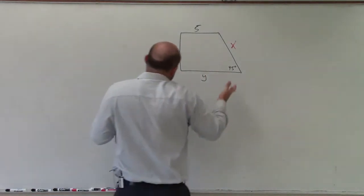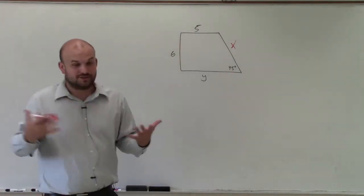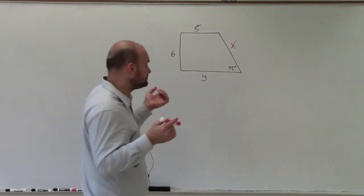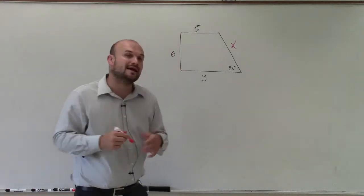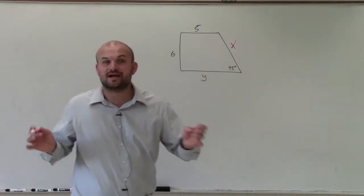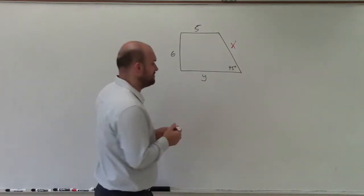Well, since I know I have a 45 degree angle, I want to see can I create a right triangle with a 45 degree angle? And if I can, then I can produce a 45-45-90 triangle, which I know I can use to apply my special relationships.